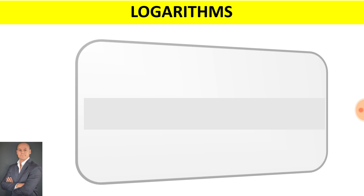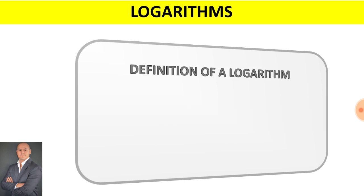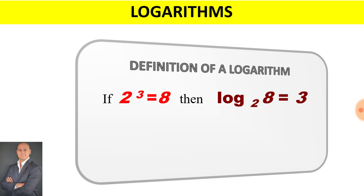For logarithms, a log represents an exponential form, and an exponent can be rewritten in logarithmic form. For the definition of a logarithm: the base 2 to the exponent of 3 is equal to 8. Therefore, when rewritten in logarithm form, we say log base 2 of 8 is equal to the exponent of 3.